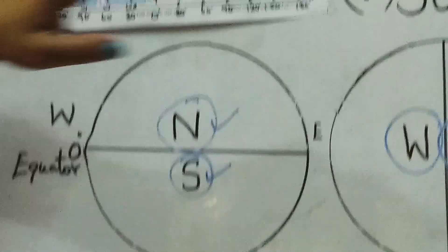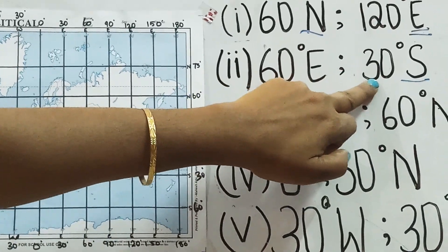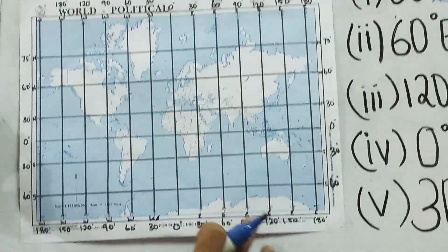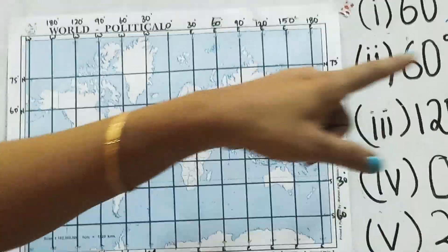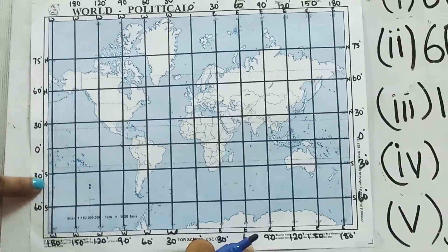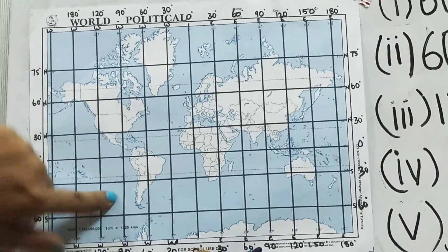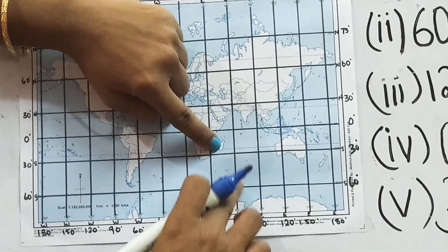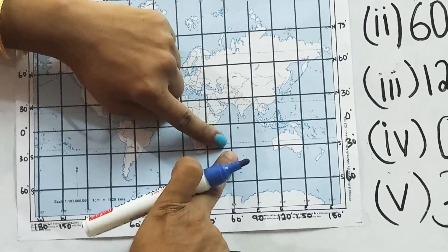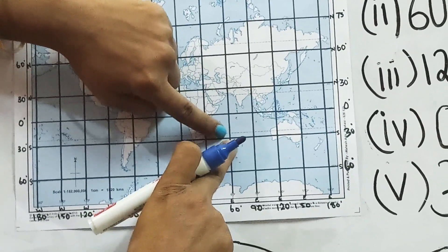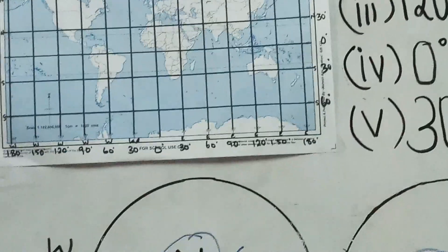The second coordinate: 60 degree east and 30 degree south. 60 degree east lies here and 30 degree south lies here. The meeting place of 30 degree south and 60 degree east is shown in blue, meaning it is an ocean — the Indian Ocean.